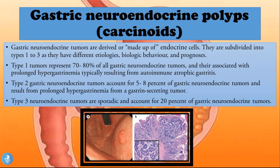Gastric neuroendocrine tumors, also called carcinoids, are derived from endocrine cells and subdivided into three types with different etiologies, biological behavior, and prognoses. Type 1 represents 70 to 80 percent of all gastric neuroendocrine tumors and is associated with prolonged hypergastrinemia, typically resulting from autoimmune atrophic gastritis. Type 2 accounts for 5 to 8 percent and results from prolonged hypergastrinemia from a gastrin-secreting tumor, typically seen in patients with Zollinger-Ellison syndrome.